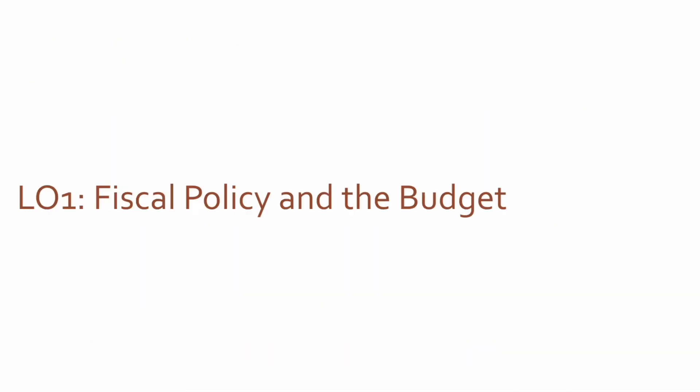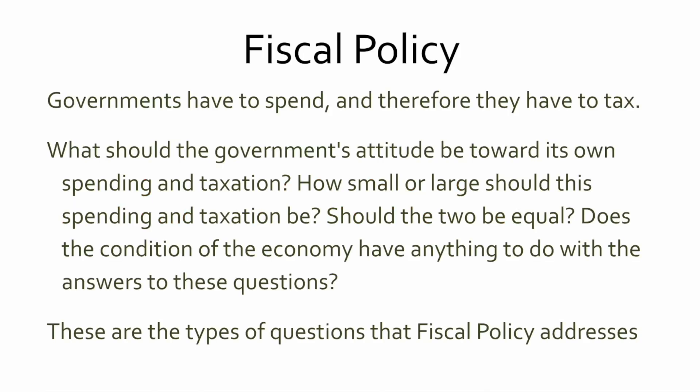Let's take a look at fiscal policy in general and how the budget relates to that. Governments have to spend. A country, province, or town all come together with the intention of working together to achieve some goals — that's exactly what government does. In order to achieve those goals, it usually involves spending, so obviously there has to be some revenue. You either get revenues or you borrow money. Every year, government makes a plan called the budget, which effectively lays out the spending priorities for a government.